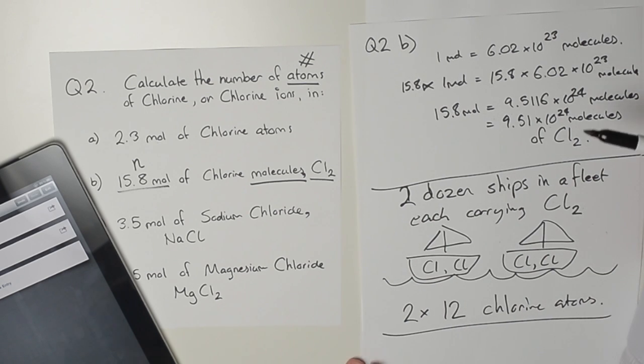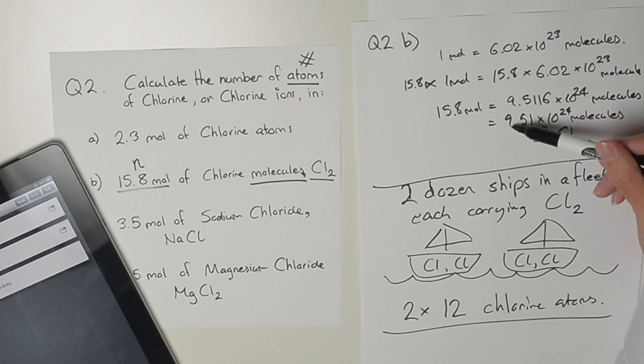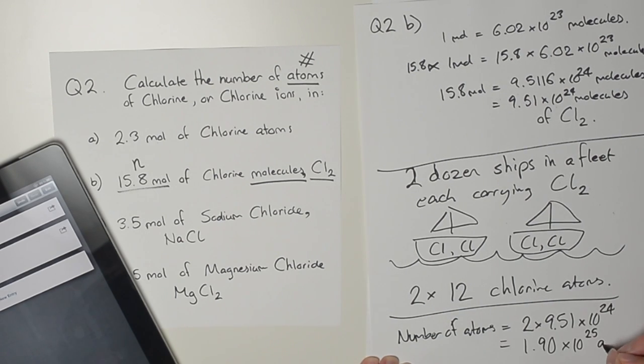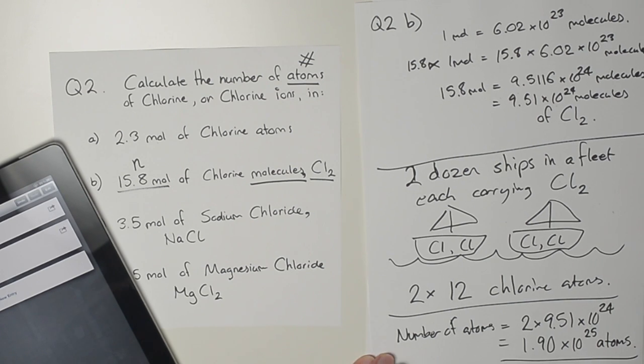So in the same thing here, instead of using dozen, we now have 9.51 times 10 to the 24 molecules of chlorine. So we have to double this number because every molecule is carrying two of those atoms. Done.